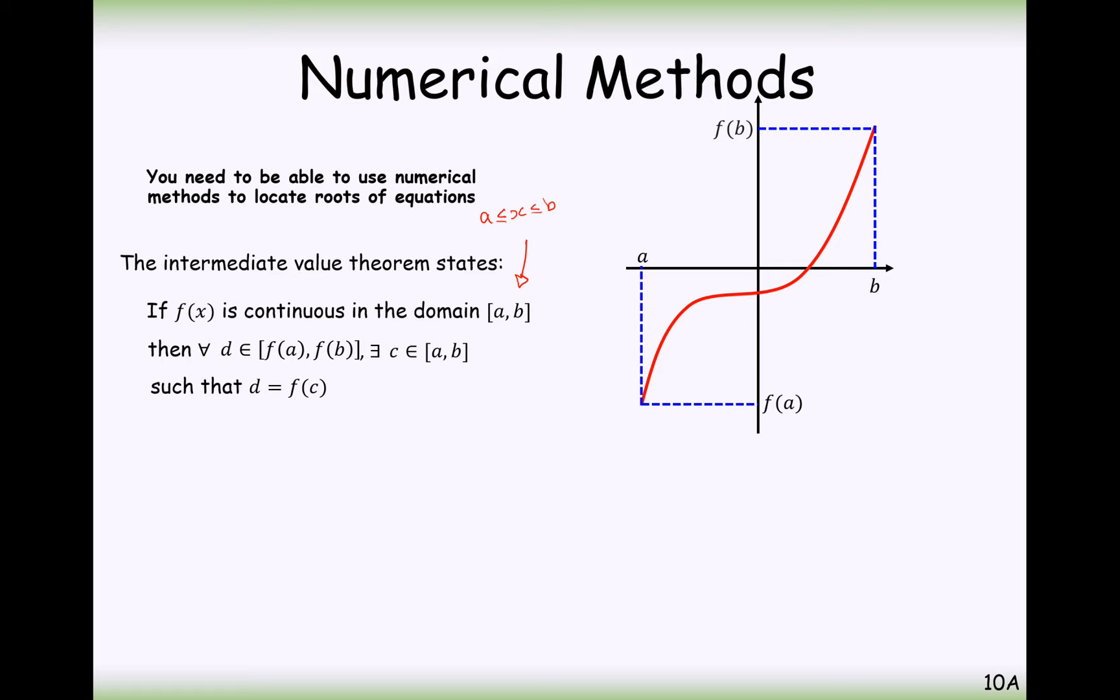Then for all D values that are in between F of A to F of B, that's to say that no matter what D value you pick, it could be down here, as long as it's in between F of A and F of B, then no matter where that D value is, there will exist a coordinate such that F of C will give you D as your output. So no matter where you are on this horizontal line here, you can trace back yourself to an X coordinate that will be the input for that output value.